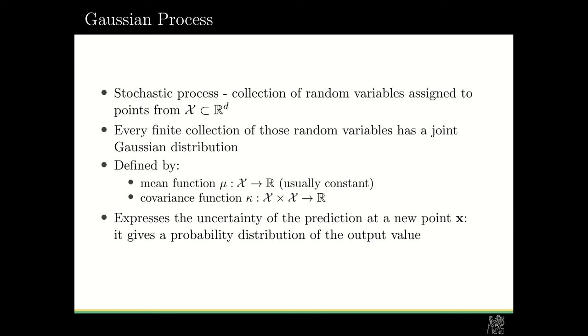What is a Gaussian process? Gaussian process is a stochastic process. It's a collection of random variables assigned to points from some domain to the d-dimension. And it has to fulfill the condition that every finite collection of those random variables has a joint Gaussian distribution. It is uniquely defined by a mean function, which is usually assumed to be constant, and a covariance function. The advantage of Gaussian process is that it also expresses the uncertainty of the prediction in a specific point.